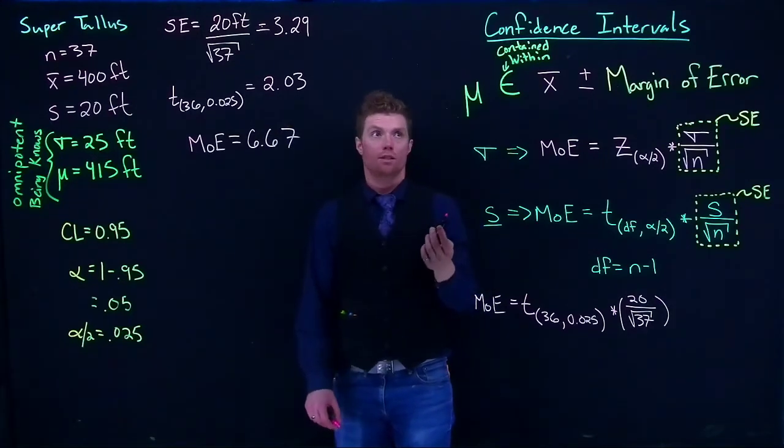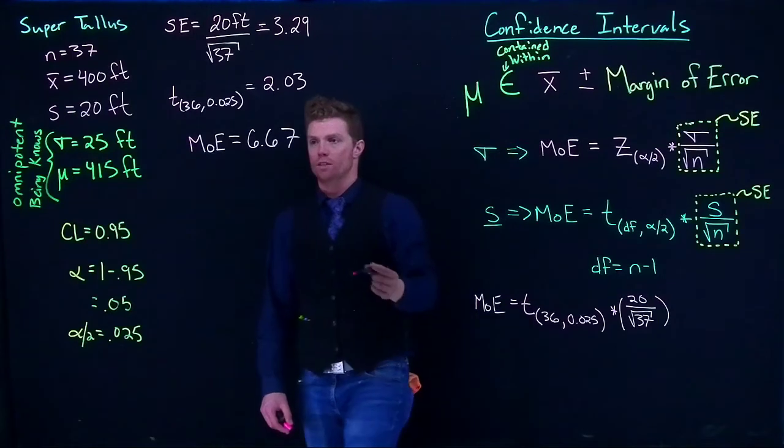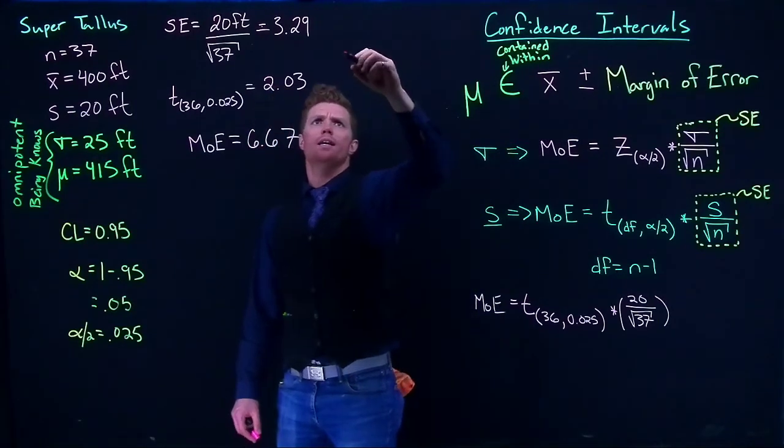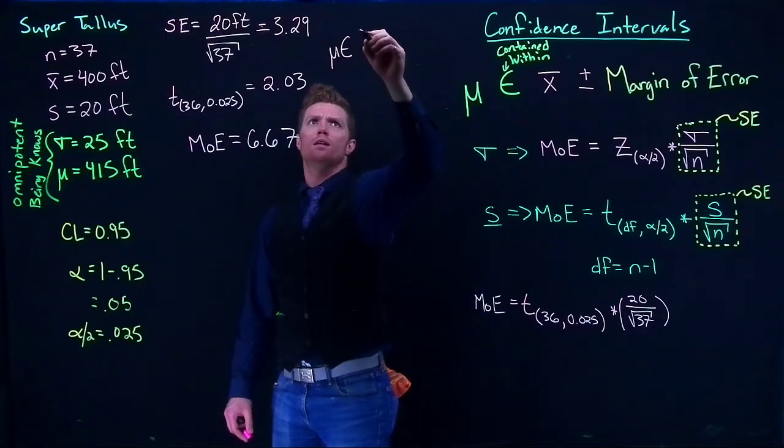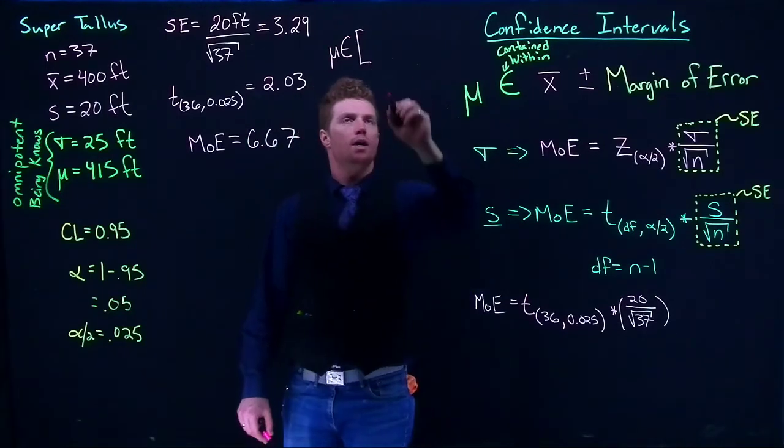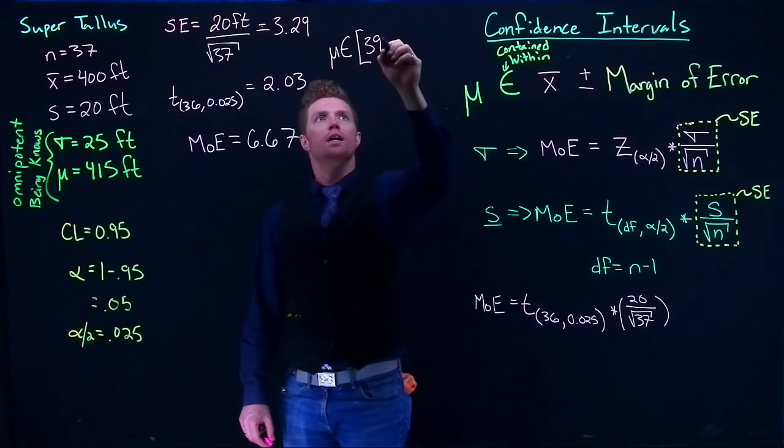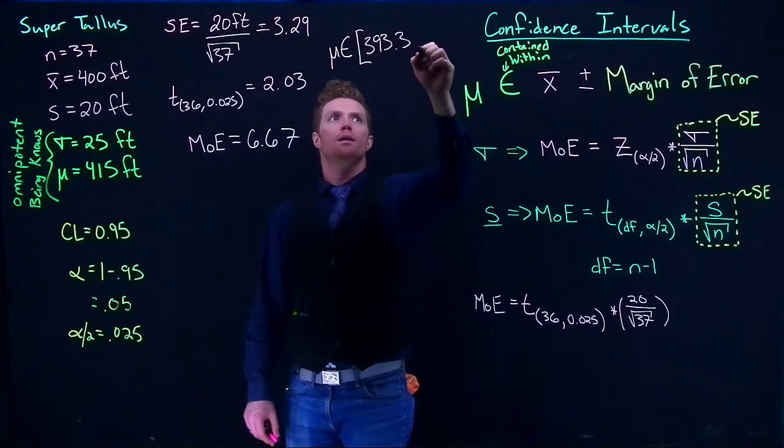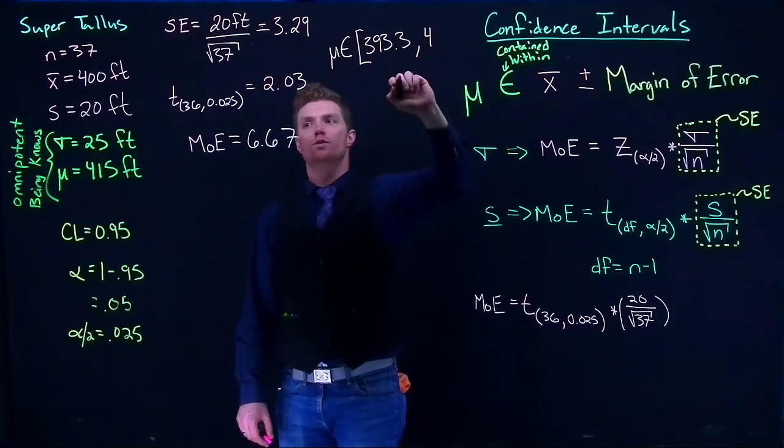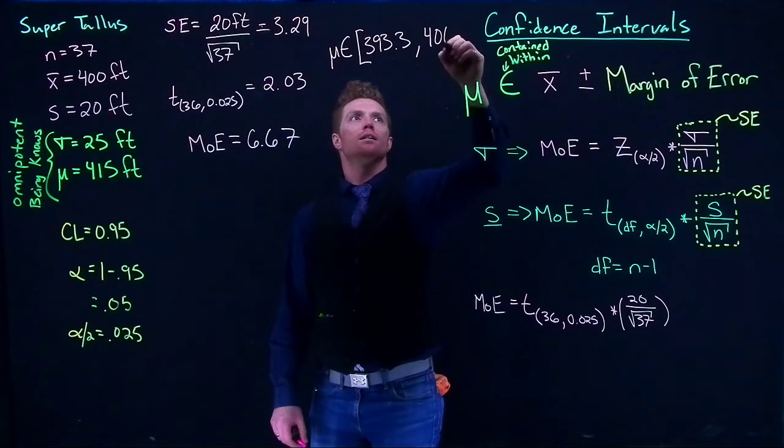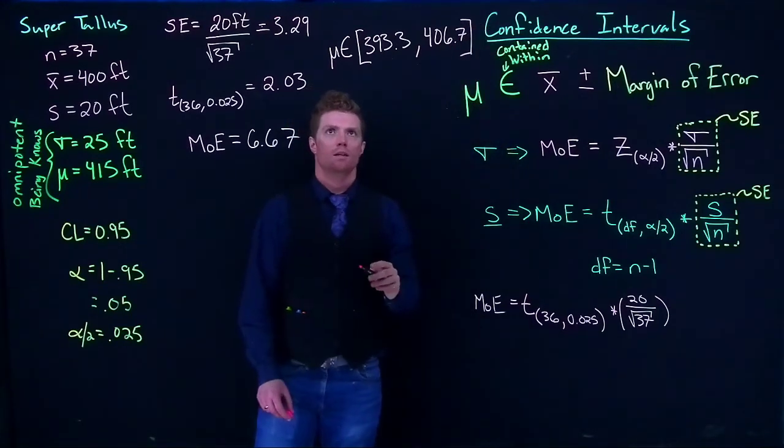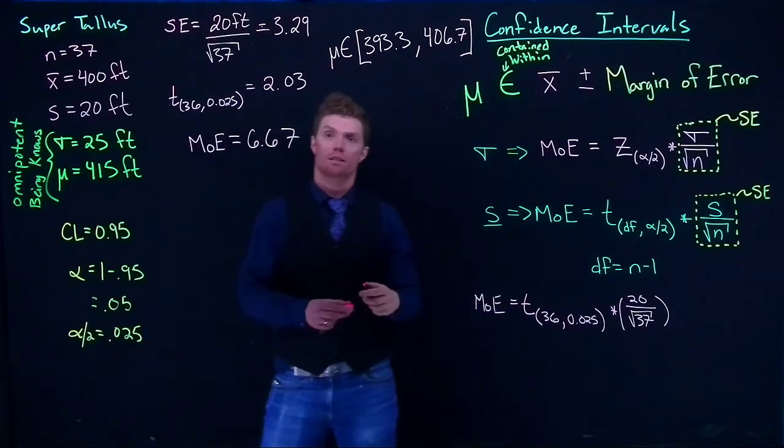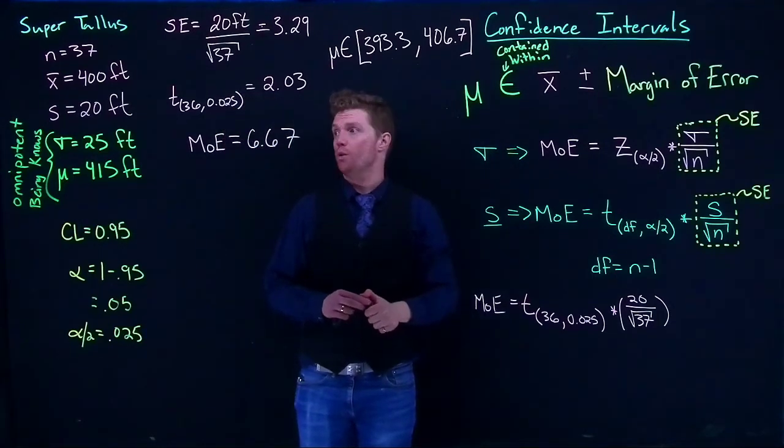Okay, so now we've got our margin of error, and all we've got to do now is actually write out our confidence interval. And so we can say now that mu is contained within 393.3, 406.7. So just a little bit of rounding there. That's where we think that the true mean is located.